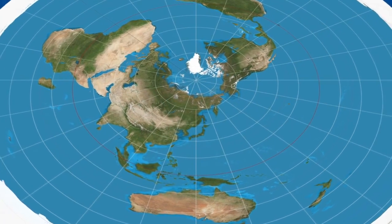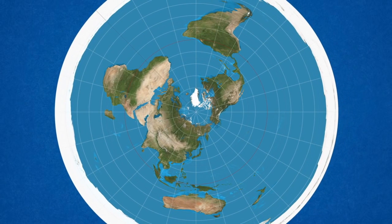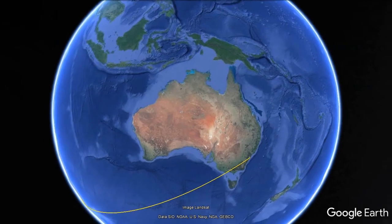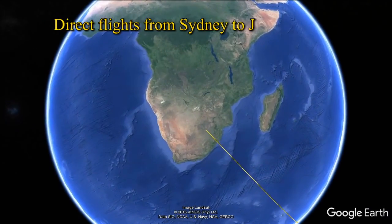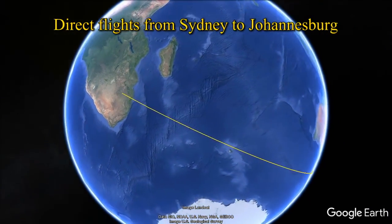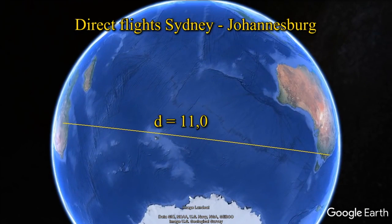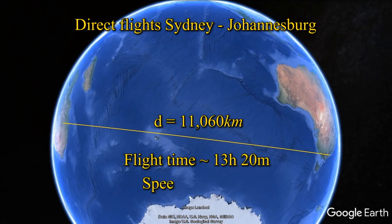The claim that distances on land are the same in the Flat Earther disc world would also obviously mean that distances over sea couldn't be. As with problems on land, the further south you go, the greater the discrepancies would become if you travel over the ocean in anything other than a north-south direction. This also screws up simple travel. Qantas fly direct from Sydney to Johannesburg in South Africa six days a week — a direct distance of 11,060 kilometres, with the flight taking around 13 hours and 20 minutes at a speed of 830 kilometres an hour.